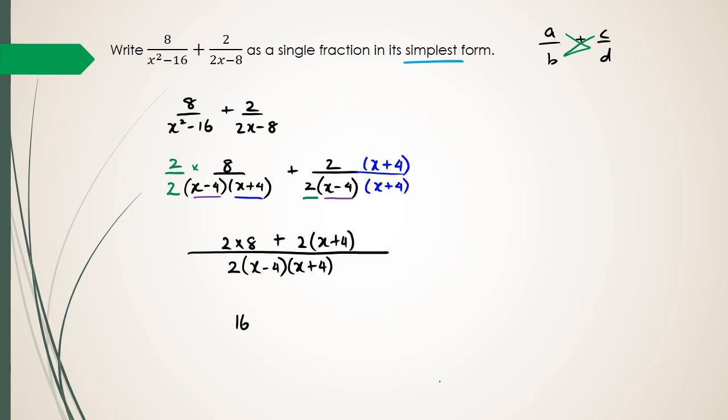So expanding this, I'm going to get 16 plus 2 times x is just 2x, and 2 times 4 is 8. And in the denominator, I've got 2 times x minus 4, x plus 4.